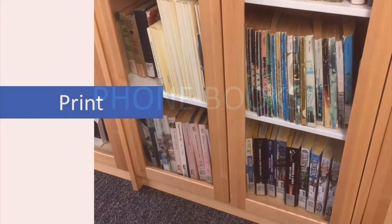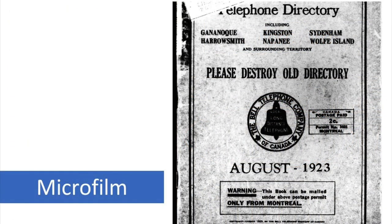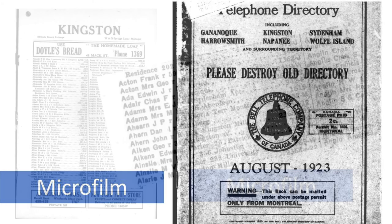Phone books are similar to city directories, but they tend to be used less often because the entries don't give quite as much information. At the very end of the shelving sequence in the Special Collections cabinet are phone books dating back to the 1930s. Phone books from even farther back are available on microfilm. The reels are located at the very end of the microfilm shelving sequence, after the newspaper microfilms. These reels include phone books from towns throughout eastern Ontario, not just Kingston, and they cover the years 1884 to 1979 with a few gaps.